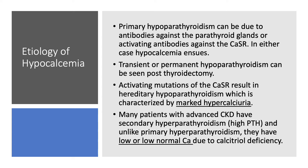Many patients with advanced chronic kidney disease have secondary hyperparathyroidism — meaning high PTH. Unlike primary hyperparathyroidism, they have low or low normal calcium due to calcitriol deficiency. In patients with CKD, although they have secondary hyperparathyroidism with high PTH, their calcium is either low or low normal because of calcitriol deficiency. This differentiates primary from secondary hyperparathyroidism: in primary, calcium is usually high; in secondary, it's low or low normal. In both cases, PTH will be elevated.